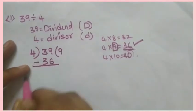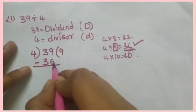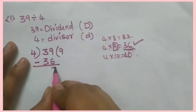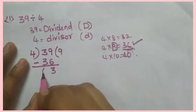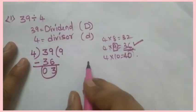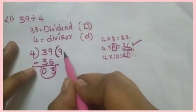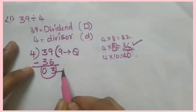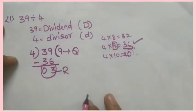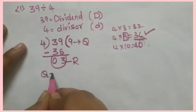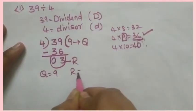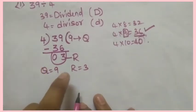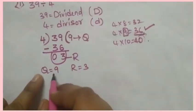Now we will do subtraction. 9 minus 6 is 3, and 3 minus 3 is 0. This number is the quotient and this 3 is the remainder. So Q (quotient) is equal to 9 and R (remainder) is equal to 3.